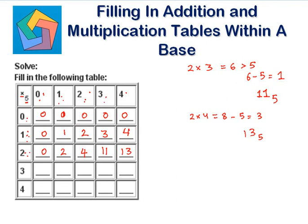3 times 0 is 0. 3 times 1 is 3. 3 times 2 is 6, and 6 in base 5 is 11. 3 times 3 is 9. 9 minus 5 becomes 4, so 4 on the right and 1 carried over — that's 14 to the base 5.